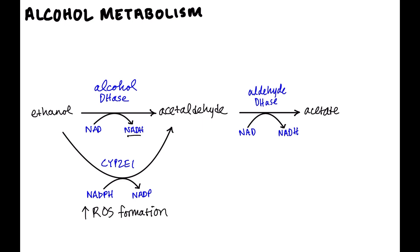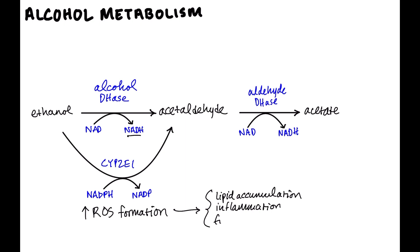That means the liver can become damaged. When the liver is exposed to free radicals, not only do we have lipid accumulation for other reasons, but we can get inflammation and ultimately fibrosis. This is why alcohol is ultimately hepatotoxic.